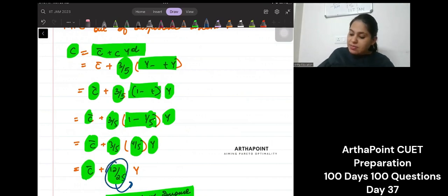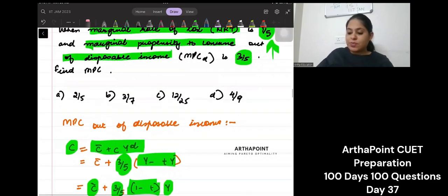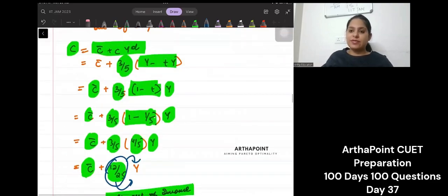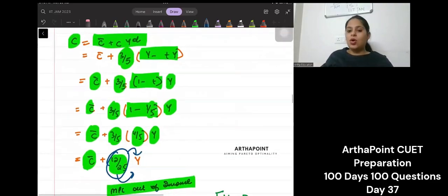So what is the coefficient with Y? 12 by 25. Therefore, the marginal propensity to consume out of income is 12 by 25. Is this clear?